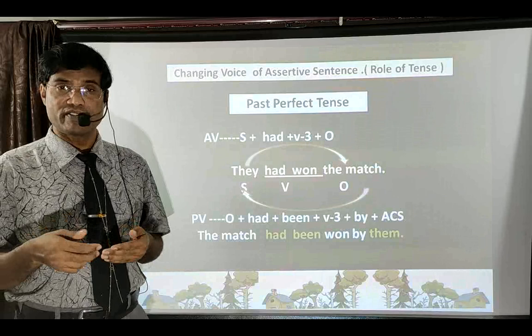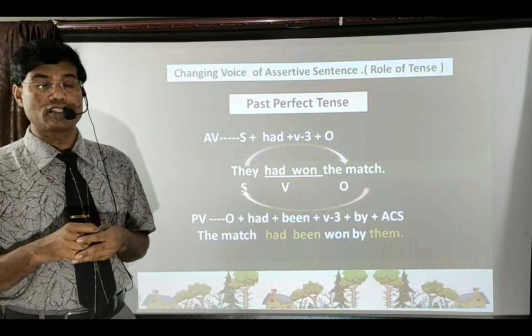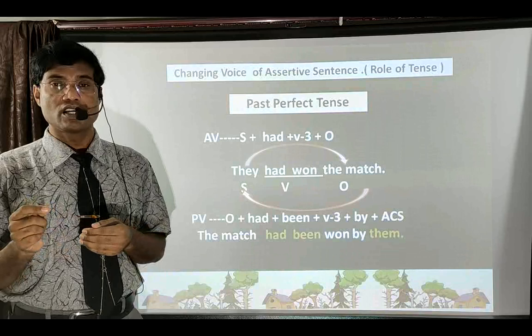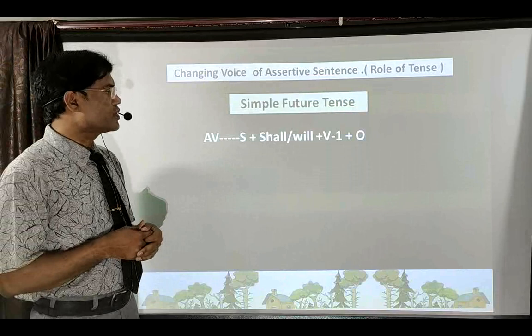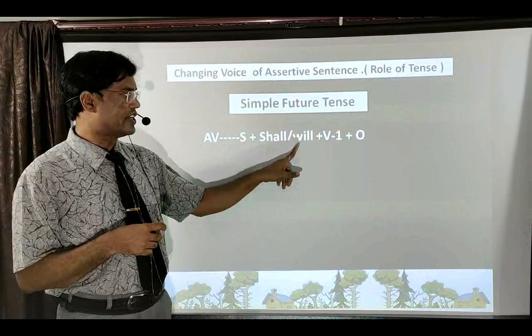Past Perfect Continuous Tense does not have a passive voice. So far we have seen two tenses without passive voice: Present Perfect Continuous Tense (Subject + have/has + been + verb-ing + Object) has no passive voice, and Past Perfect Continuous Tense (Subject + had + been + verb-ing + Object) also has no passive voice. Therefore, we will directly move to Simple Future Tense.